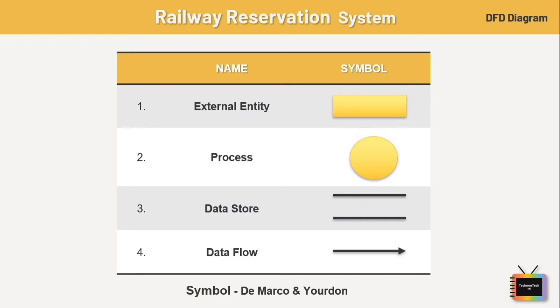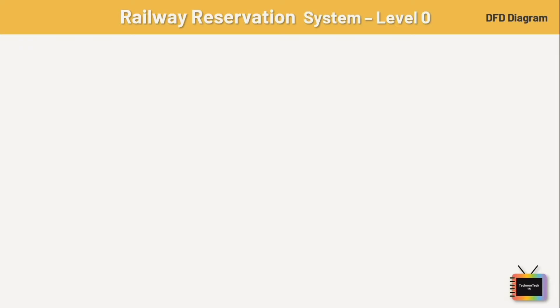Now let's draw the zero level DFD diagram for the railway reservation system. The zero level DFD defines the overview of the reservation system — it is an abstract view of the overall system. At level zero you typically represent the entire system as a single process with external entities. This is also called the context diagram.